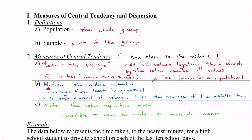Then we have median. Median is the middle value — think of it like the median of a road. To find the median, you arrange the values from least to greatest and then the middle one is the median. If there's an even amount of values, you take the average of the middle two, and we're going to see that in our first example.